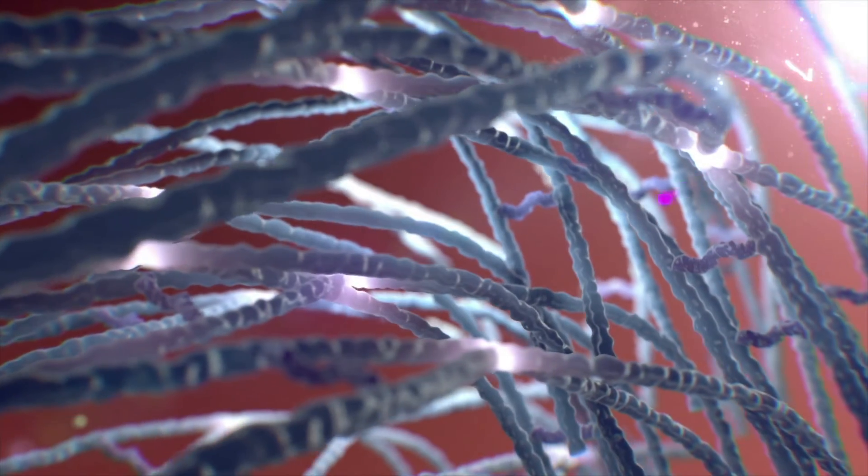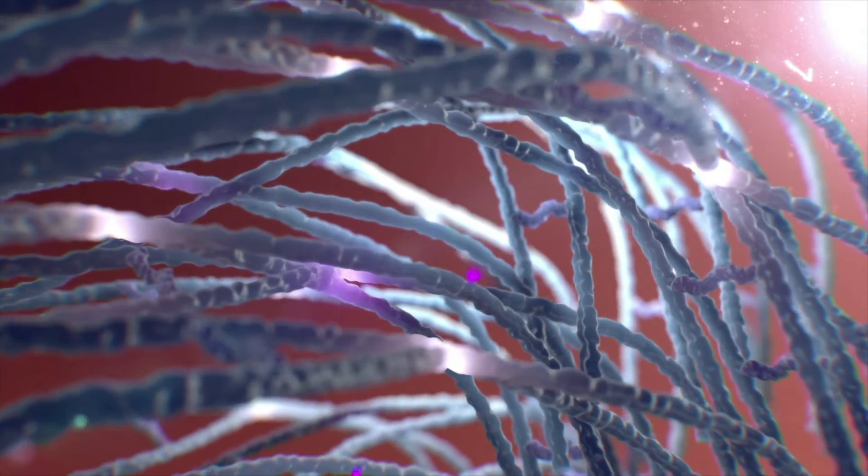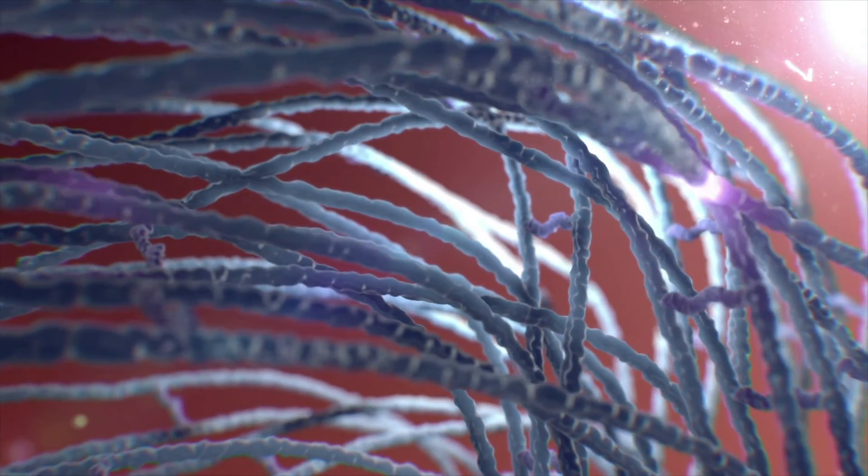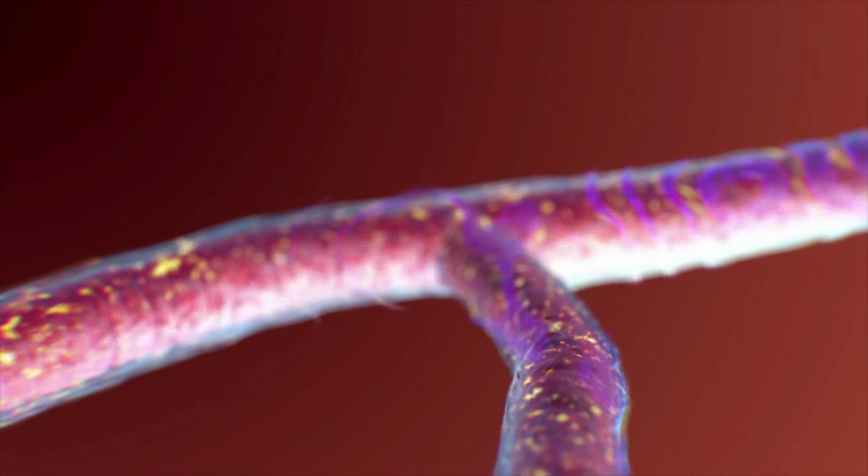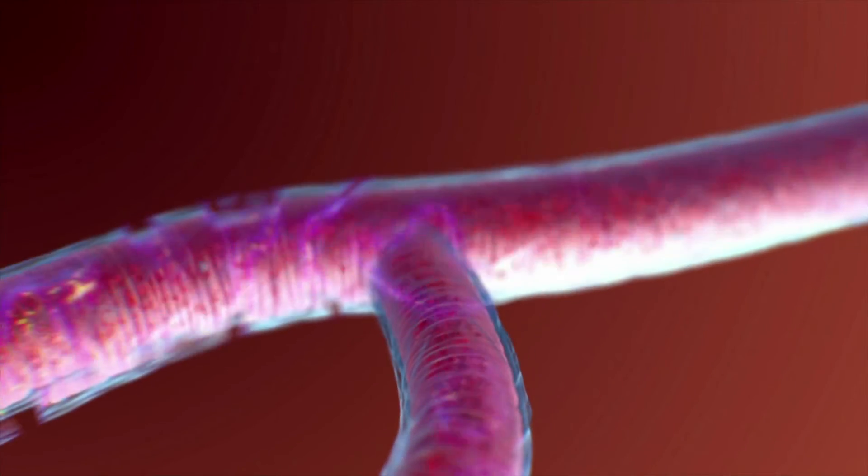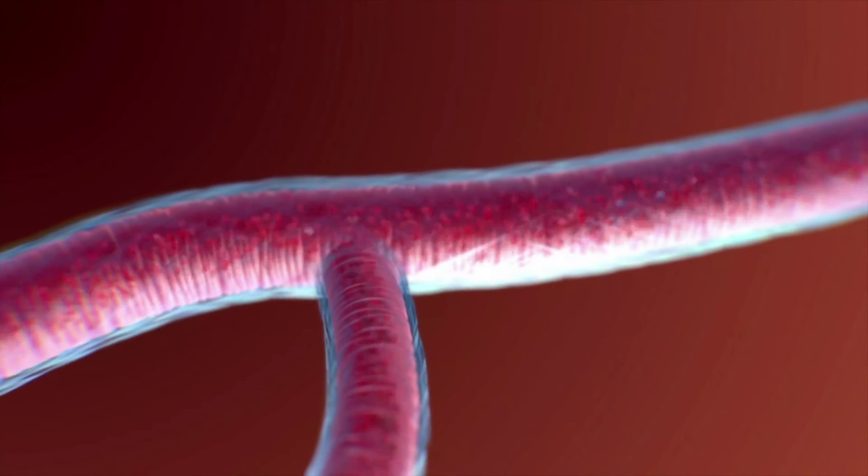But what if there were a molecule that could break these unwanted cross-links? Then only the original regular lattice would remain, restoring flexibility to the blood vessels.